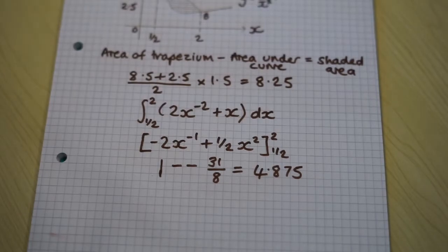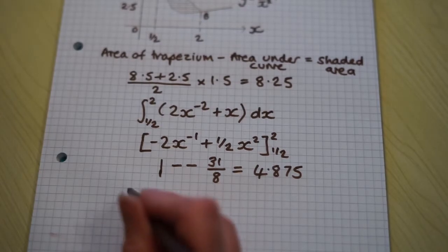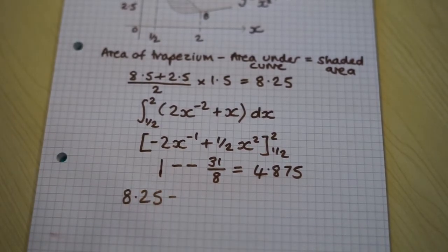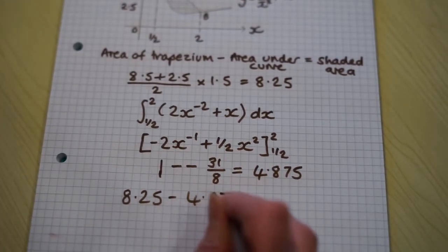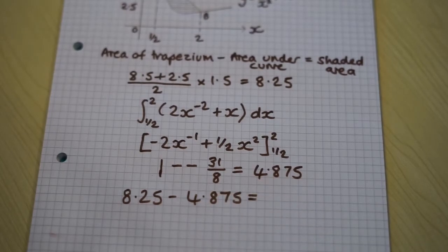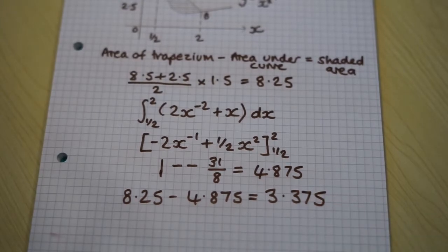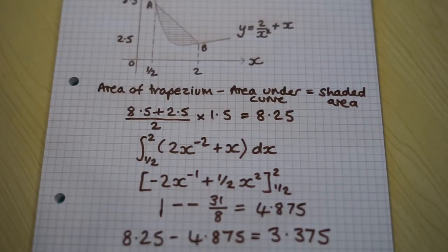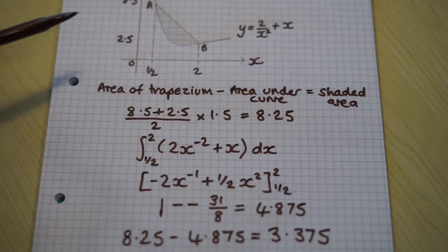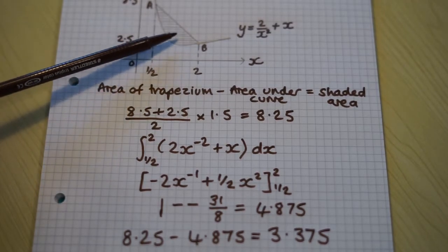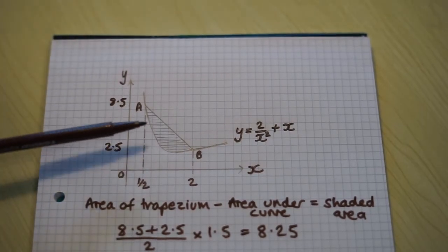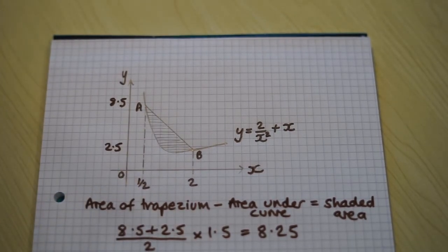So now to round this off, we've got the trapezium area and we're taking away the area under the curve. And we get this. So 3.375 is the shaded area. Bring it back down again, the shaded area just there. I hope this video has helped. Thank you for watching.